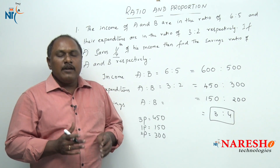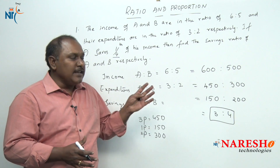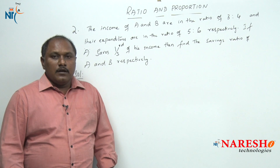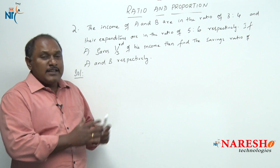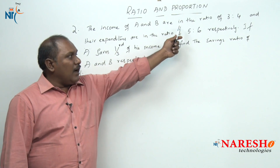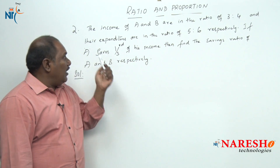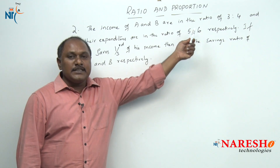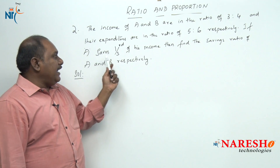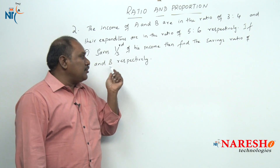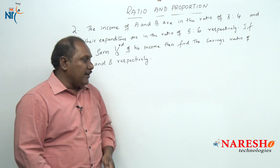Let us take one more example of the same model. The income of A and B are in the ratio of 3 is to 4 and their expenditures are in the ratio of 5 is to 6 respectively. If A saves one-third of his income, then find the savings ratio of A and B respectively.